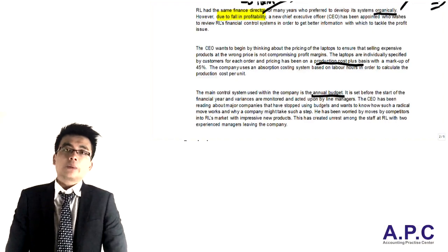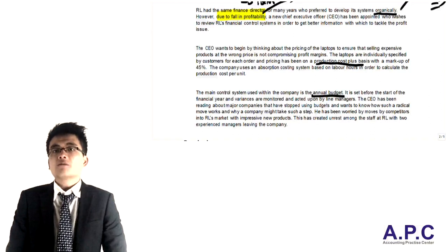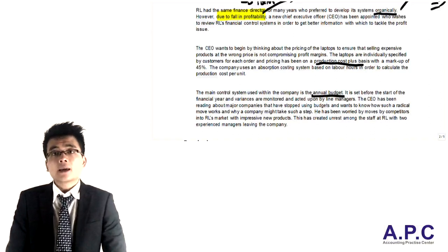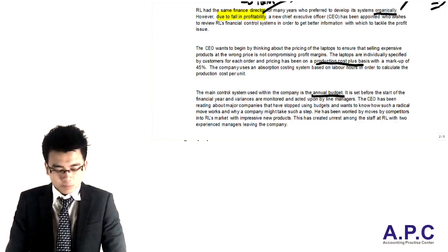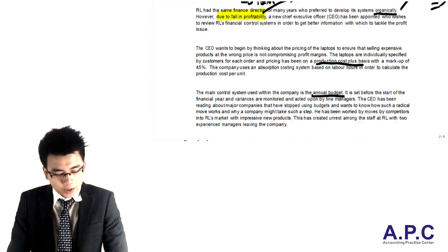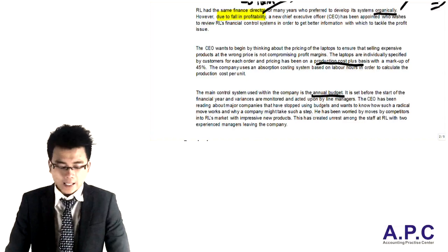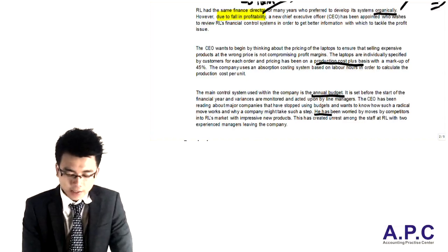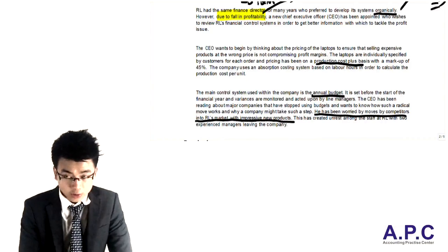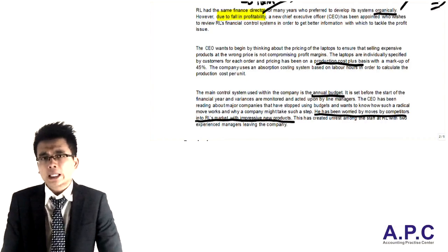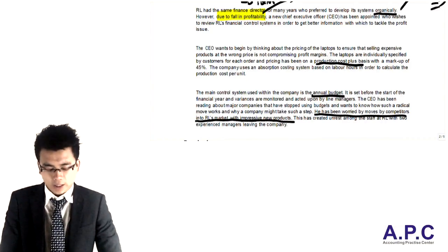The CEO has been reading about major companies stopping using the budget and wants to know how such a radical move works and why companies might take such a step. It's simply because the environment is changing, either internally or externally, and the company may use Beyond Budgeting. The company is also facing serious technology change from competitor moves, so it's suitable for the company to use the Beyond Budgeting techniques.